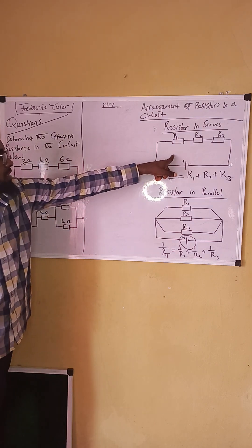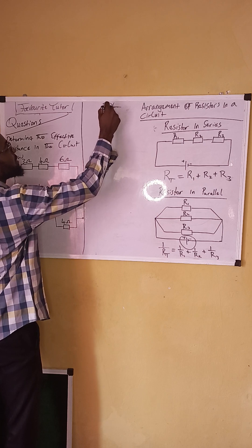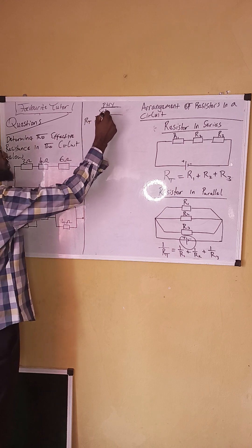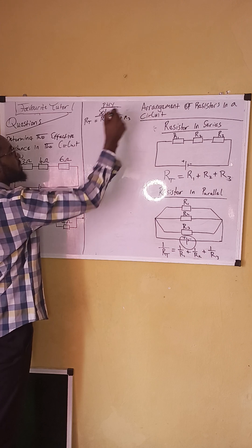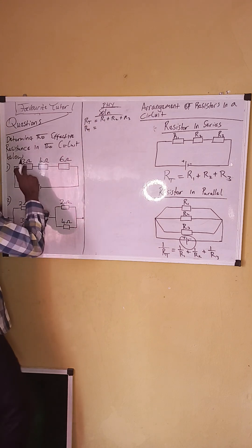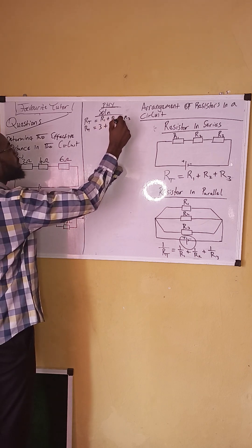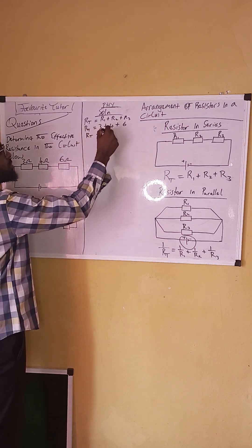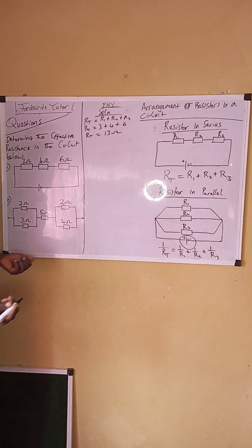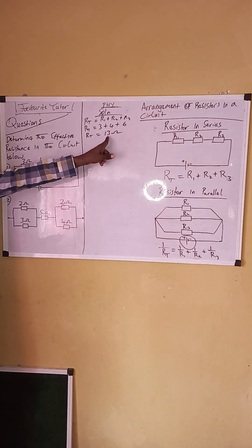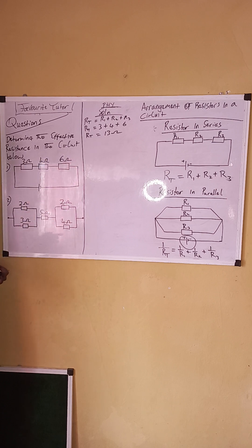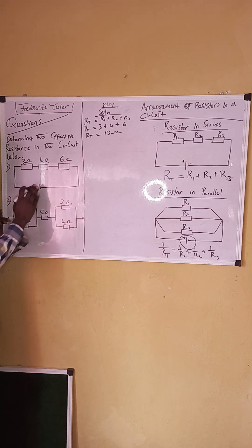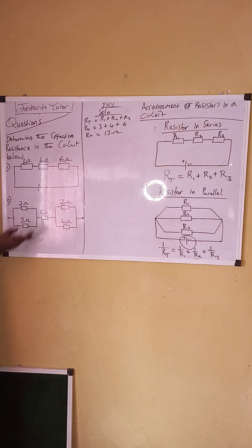The first circuit is a series connection. We have R1, R2, and R3. Total resistance equals R1 plus R2 plus R3, which is 3 plus 4 plus 6. The total resistance equals 13 ohms. It is very simple — they are all in series, so we just add them together.